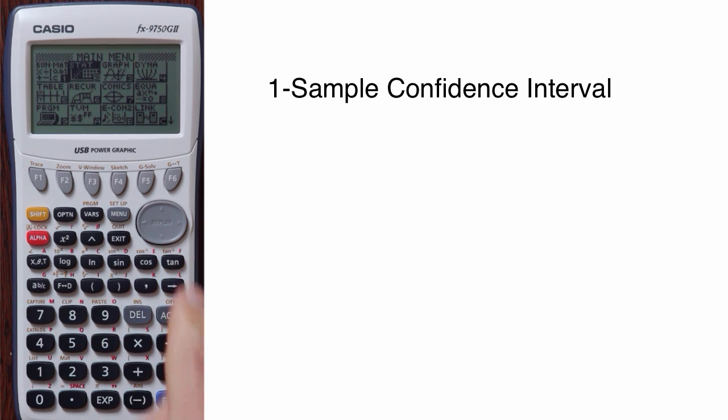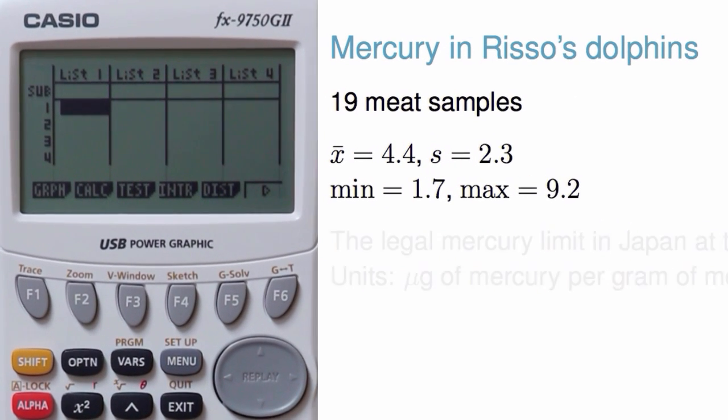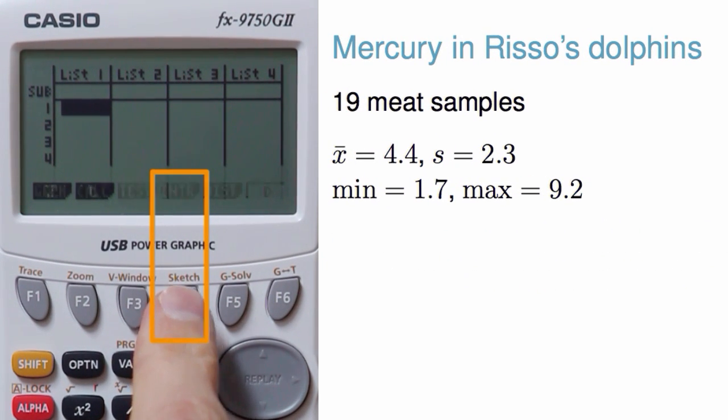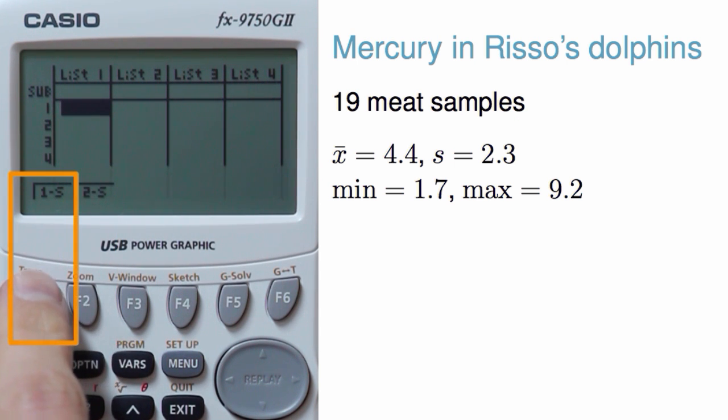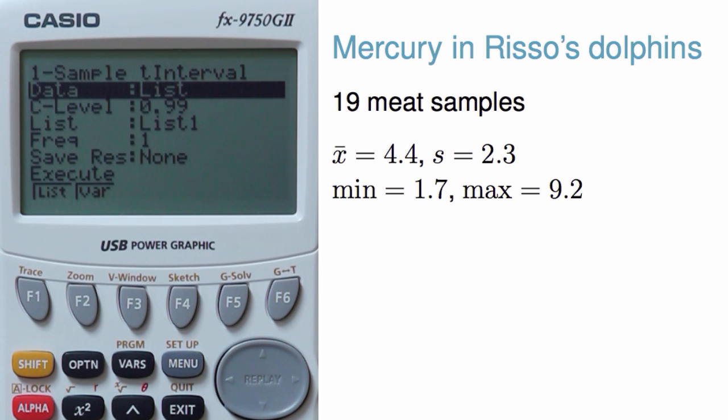To begin, I navigate to the stats section through the menu. Go to enter for confidence interval, choose t, and then choose 1s for one sample of numerical data. I'll be using summary statistics, so I'll select var.